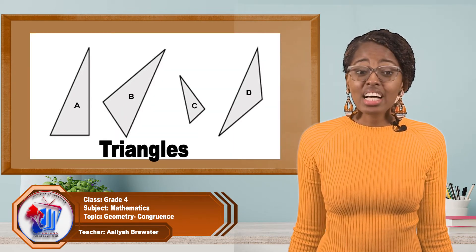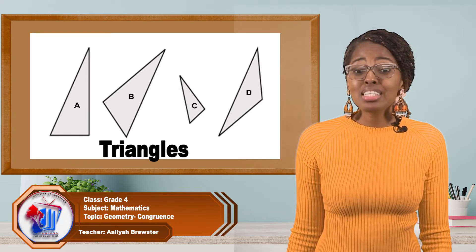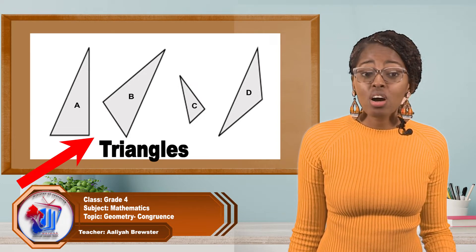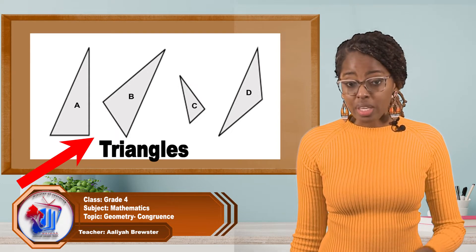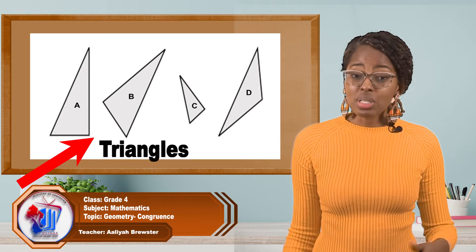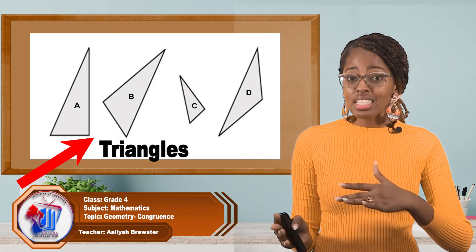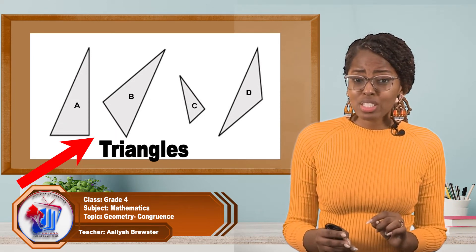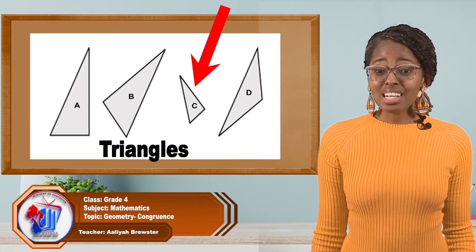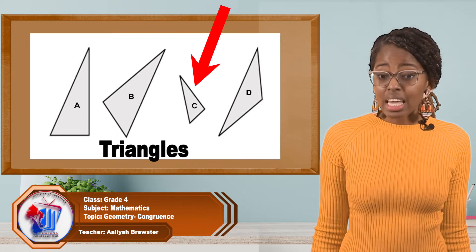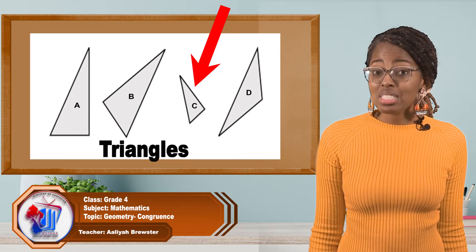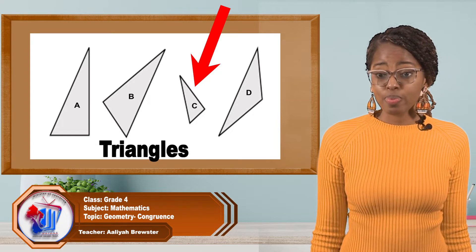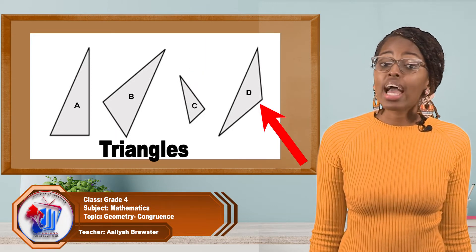Looking at the triangles, we are going to work an example to see how congruence works. The two triangles on the left are congruent — triangles A and B. Even though they are not positioned the same way, and one is slightly tilted, they are still congruent because they have the same measurement. While the third triangle is similar to A and B, but it is not the same size, therefore it is not congruent. The last triangle, which is triangle D, is neither similar nor congruent to any of the other triangles.